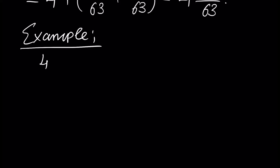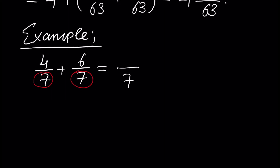For example, assume 4 over 7 plus 6 over 7. When we want to add two fractions with the same denominators, we just add the numerators and the denominator stays the same. So 4 plus 6 is 10, giving us 10 over 7, which can be written as 1 and 3 over 7.